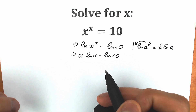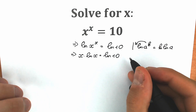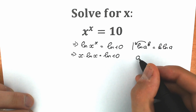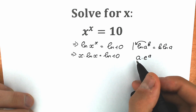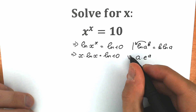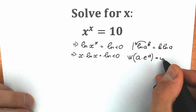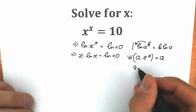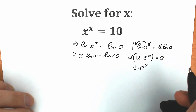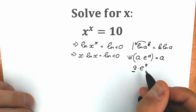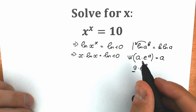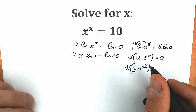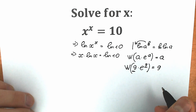Right now we need to remember a really interesting function — the Lambert W function. When we have an expression like a times e to the power a and we apply the Lambert W function, the result is just a. For example, if we have 9 times e to the power 9 and apply Lambert W, the result is 9. In our case, a equals 9.